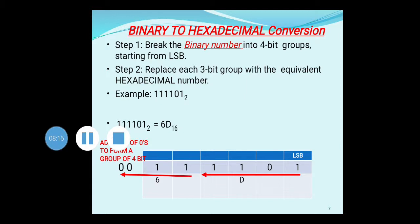Here one example is given: 111101. It has only an integer part with no fractional part. First, mark the LSB bit, then start grouping from LSB towards MSB. From the LSB bit: 1, 1, 0, 1 — these 4 bits form the first group. Then the next group: there are only 2 bits remaining — 11. To form a group of 4 bits, 2 more bits are needed, so you add 2 zeros to form 4 bits.